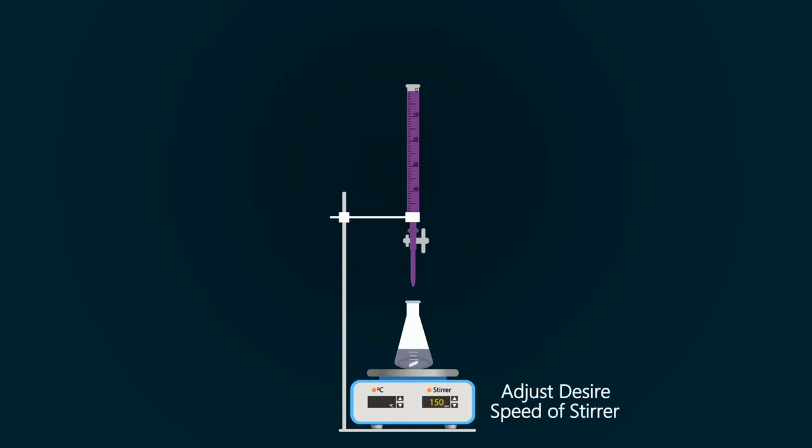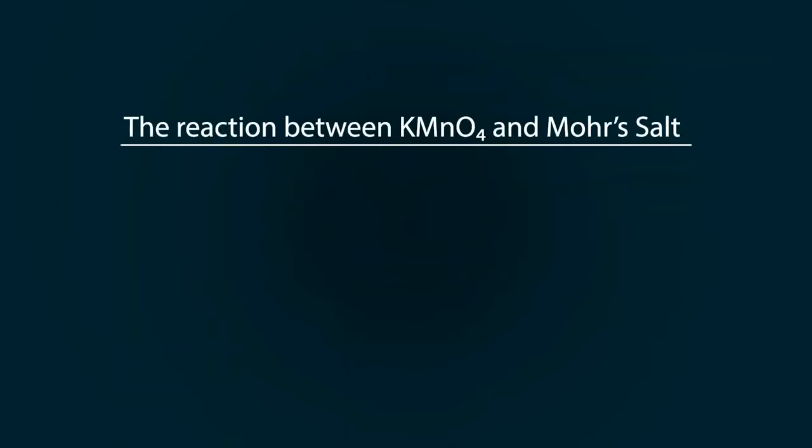Now start adding the KMnO4 solution dropwise. You can stop the burette when light pink color is achieved. Stop pouring and take the reading. The volume of KMnO4 used is 4 milliliters.